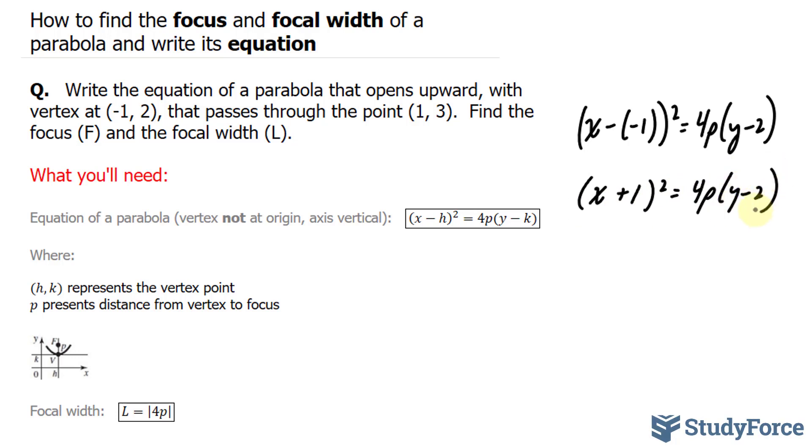The next step is to substitute the point through which this parabola passes. This parabola passes through (1, 3). This will represent my x and this will represent my y. So let's go ahead and substitute these values into this formula.